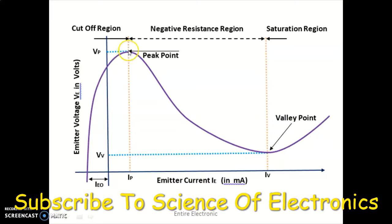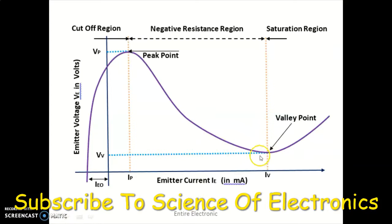At the peak point, the UJT breaks down and large current starts flowing through the device. The voltage across the device starts reducing while current increases — this region is called the negative resistance region. The region where the UJT is off is called the cutoff region. After the valley point VV, the voltage starts increasing along with the current, and this region is called the saturation region.